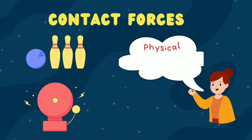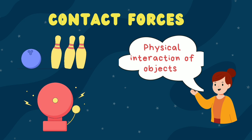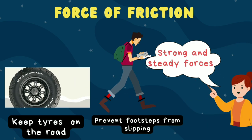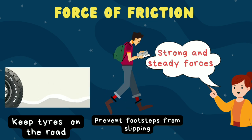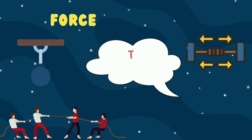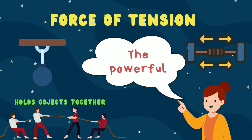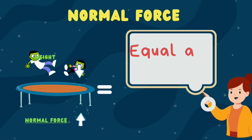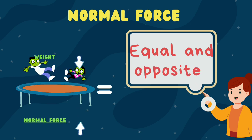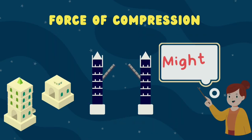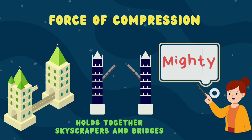Contact forces are like the handshake of the physical world, the point where objects meet and interact. There is the strong and steady force of friction, preventing our footsteps from slipping and keeping our tires on the road. The powerful force of tension, like a rope between two tug-of-war teams, holds objects together. Then there is the equal and opposite normal force, like a trampoline bouncing back, supporting the weight of objects. And the mighty force of compression holds together the towering skyscrapers and bridges we admire.